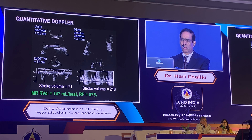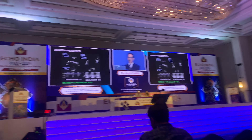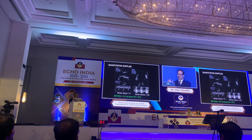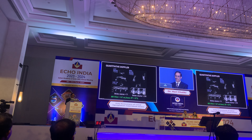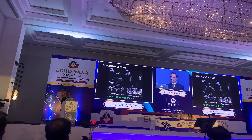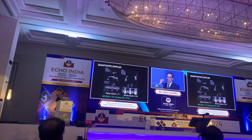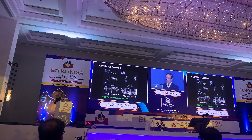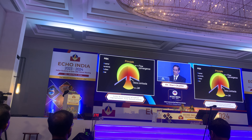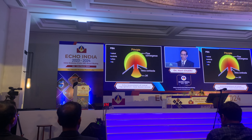You can also do quantitative Doppler. Look at the LVOT diameter — if there is only mitral regurgitation and no aortic regurgitation, measure the LVOT area, multiply by the VTI to get stroke volume through the LVOT. Then measure the mitral annulus diameter, multiply by the VTI through the mitral annulus to get stroke volume at the annular level. Take the difference to get the amount of mitral regurgitation. Be careful measuring diameters because minor errors amplify when you are squaring them.